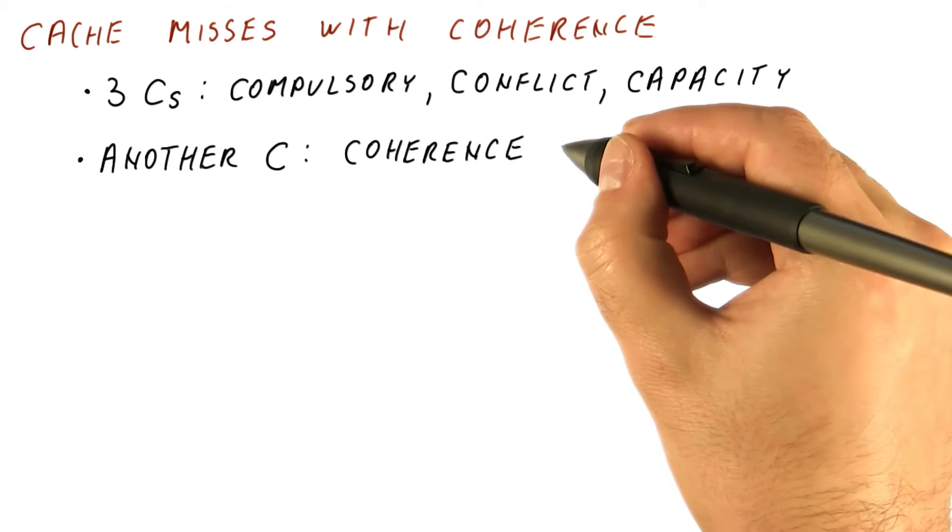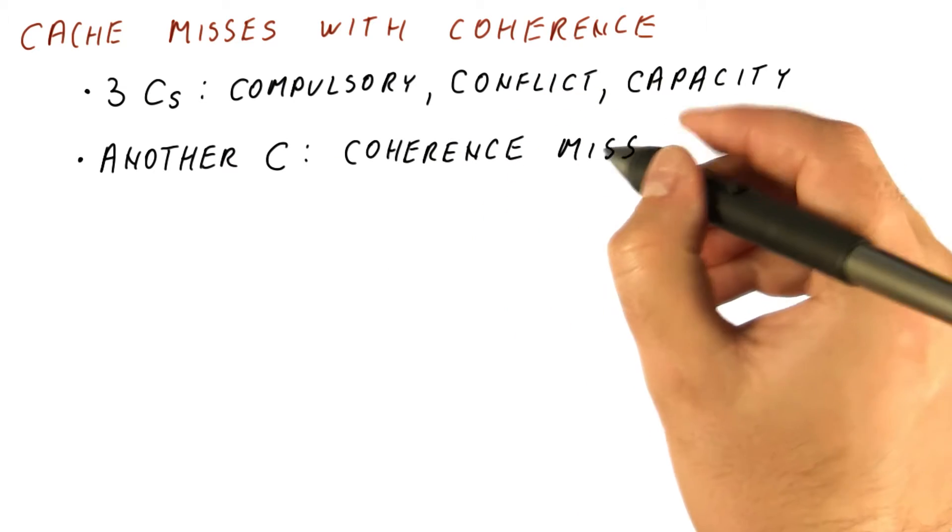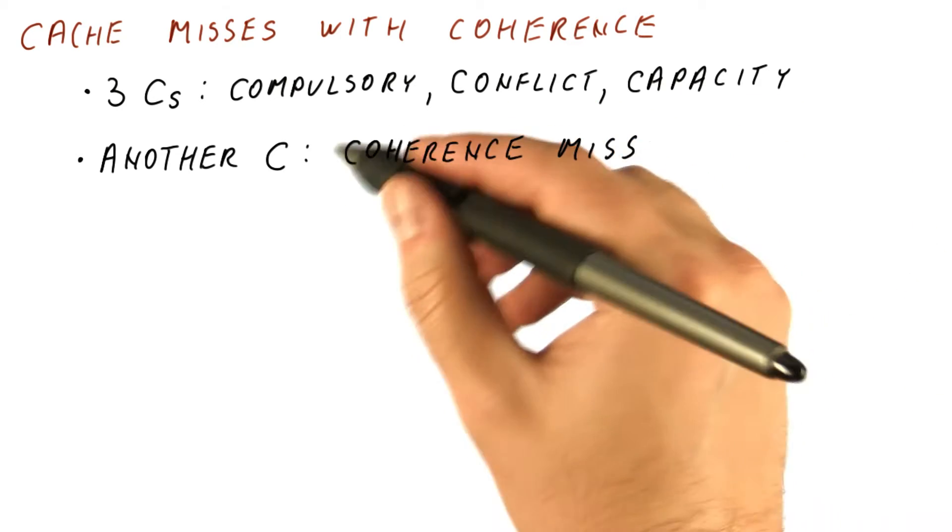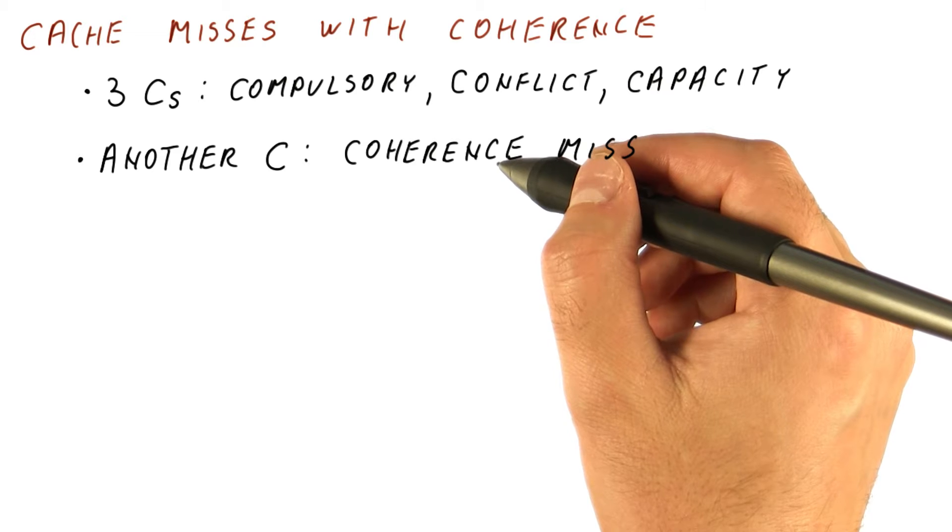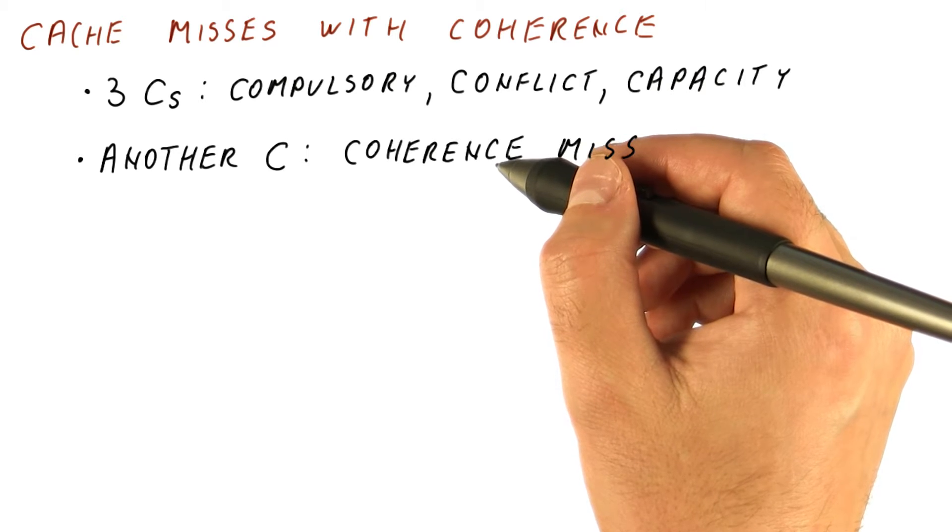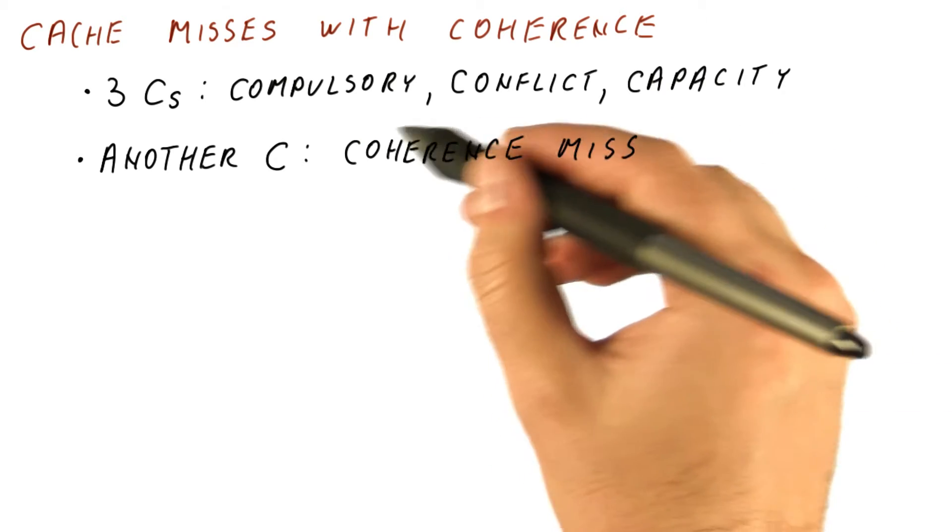With coherence, there's another C. We can now have a cache miss caused by coherence. For example, when we read something, somebody writes it, and we want to read it again, that would not be a miss except for coherence.